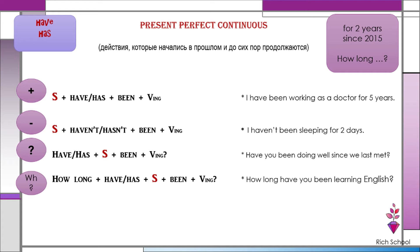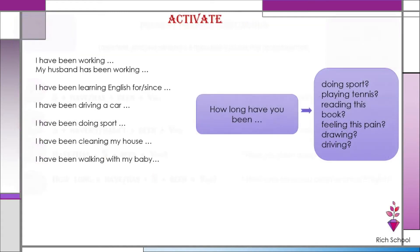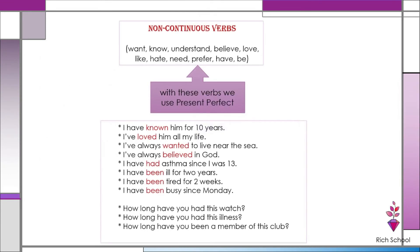I'm comparing these two tenses because both use 'for' and 'since.' For example, 'I have known him for two years.' You can't say 'I have been knowing him for two years.' We can't use present perfect continuous here, though you began knowing him two years ago and still know him — because there are some verbs which we don't use in continuous tenses.